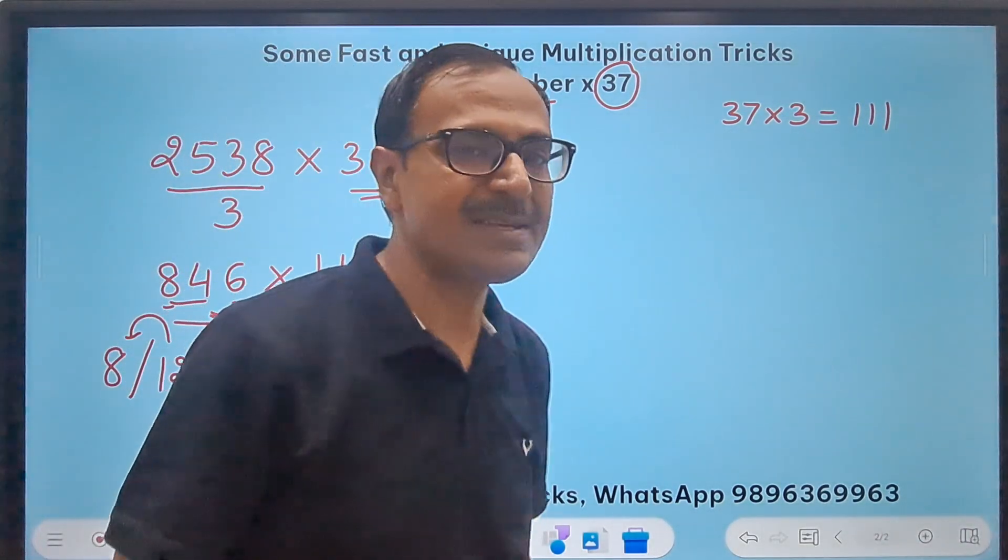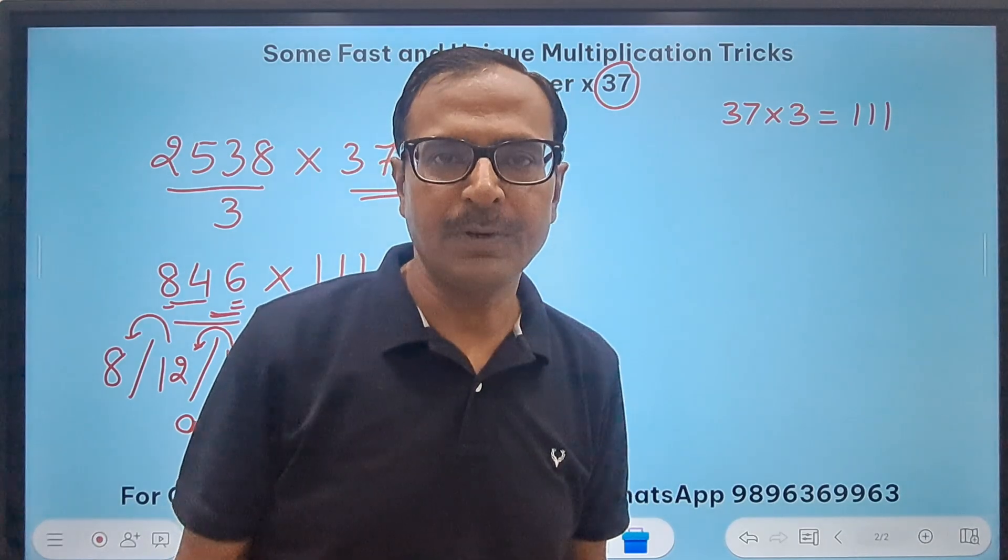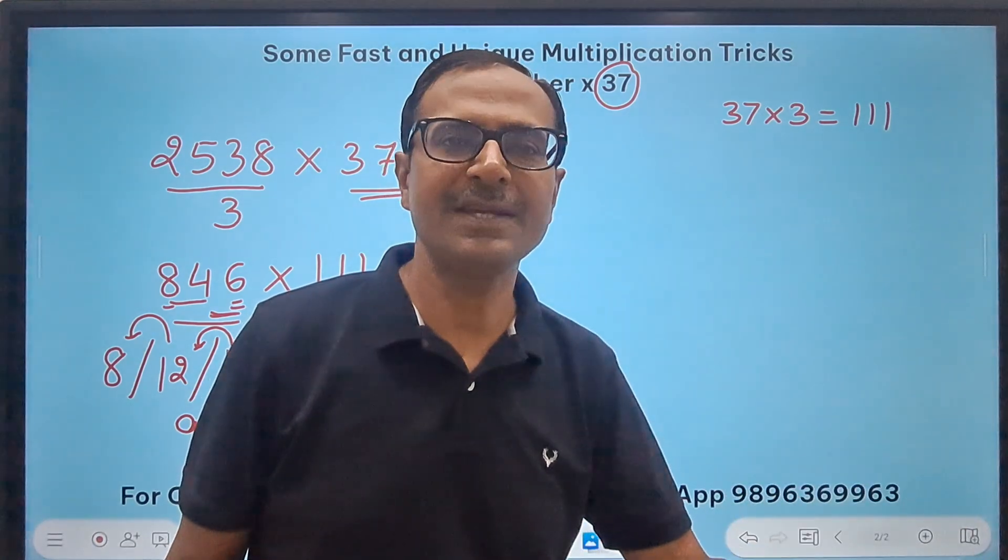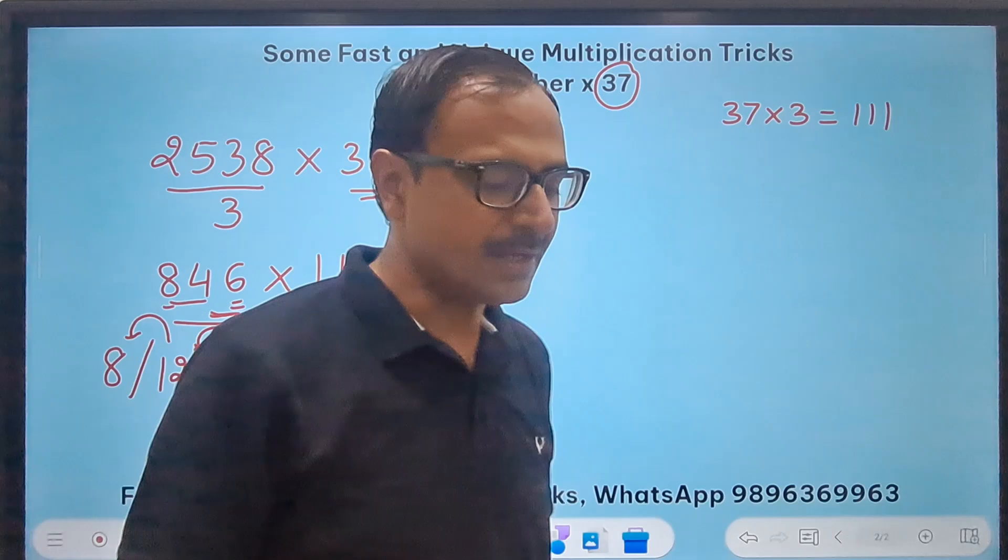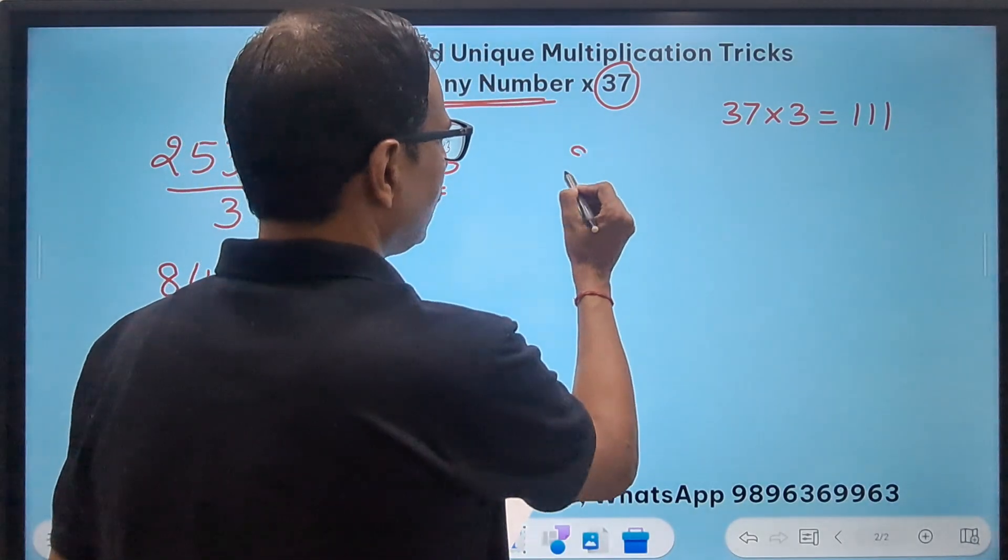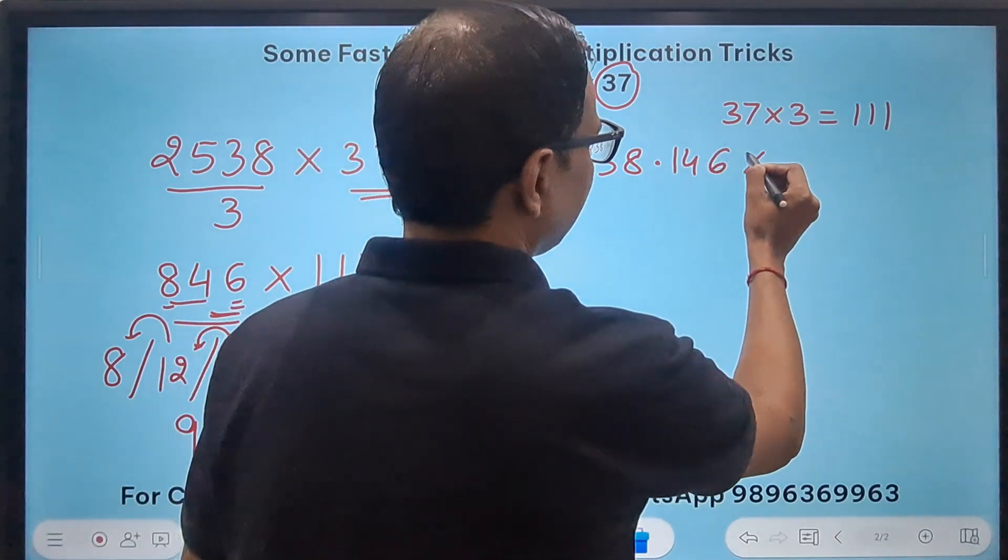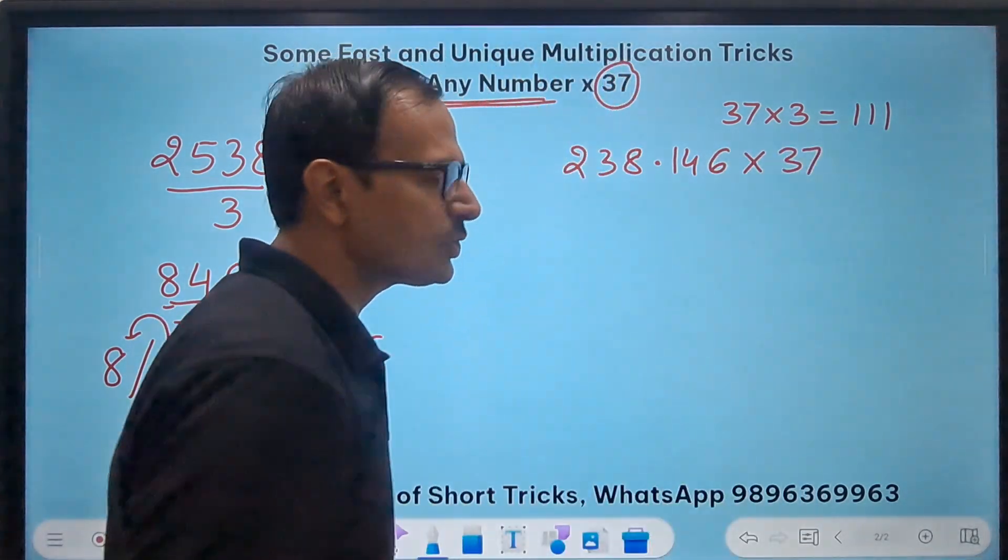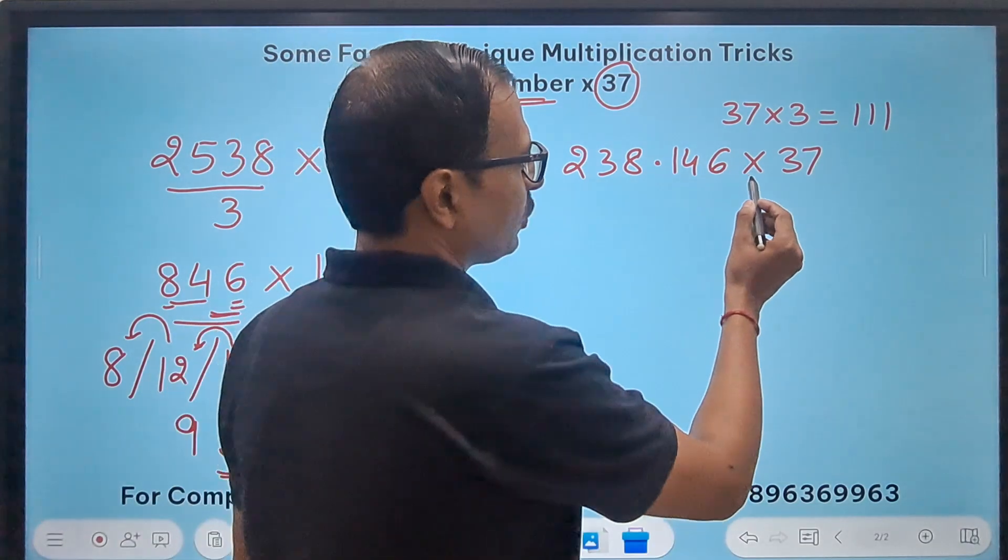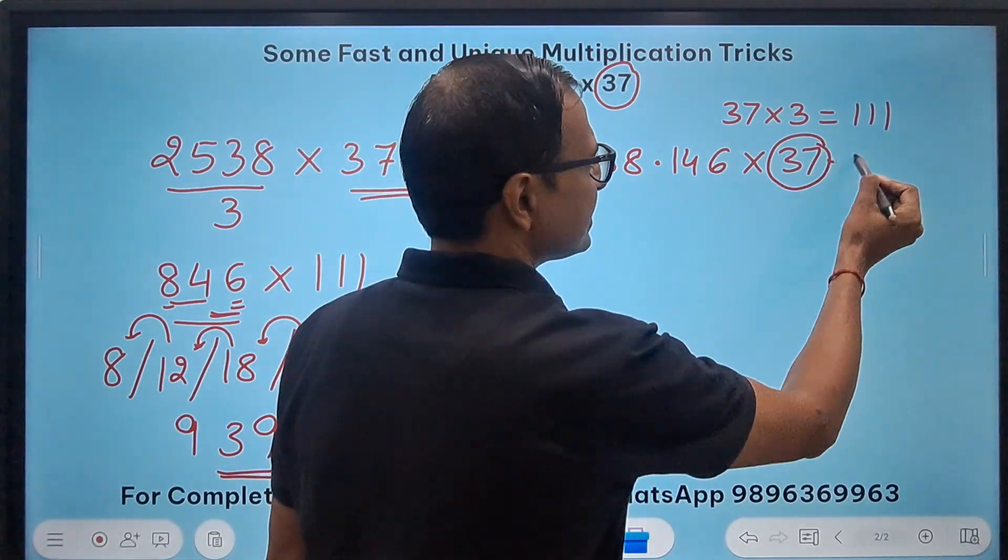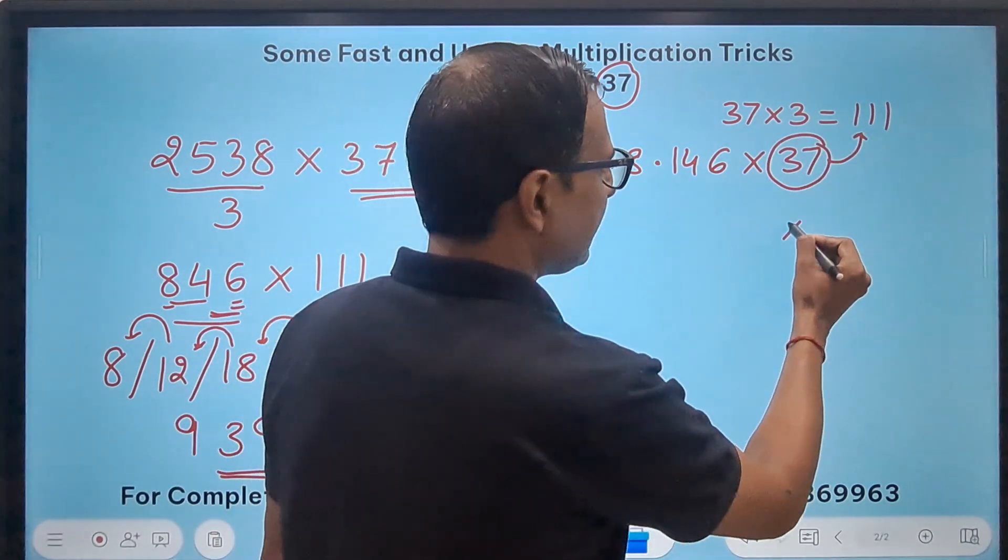Likewise even if you have decimal in the first number and you want to multiply that by 37 you will surely get the correct answer. Let's take an example 238.146 and I want to multiply that by 37.